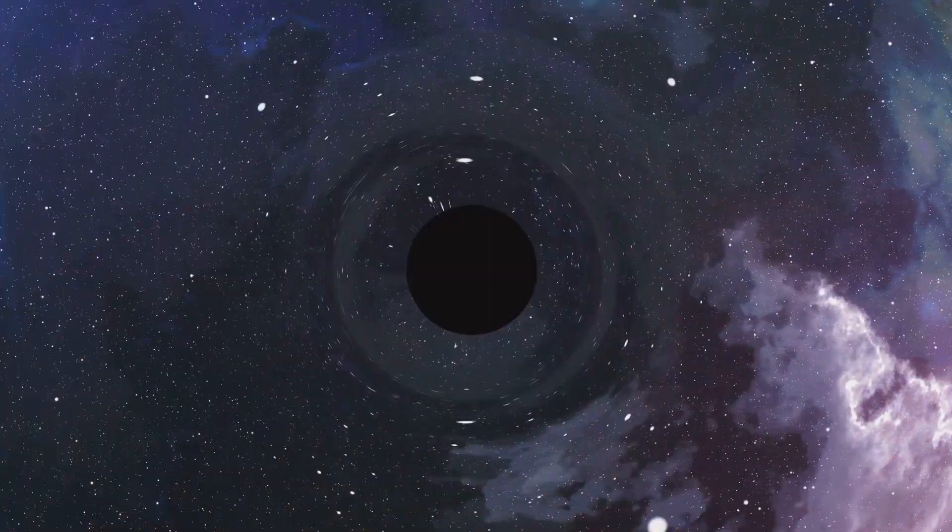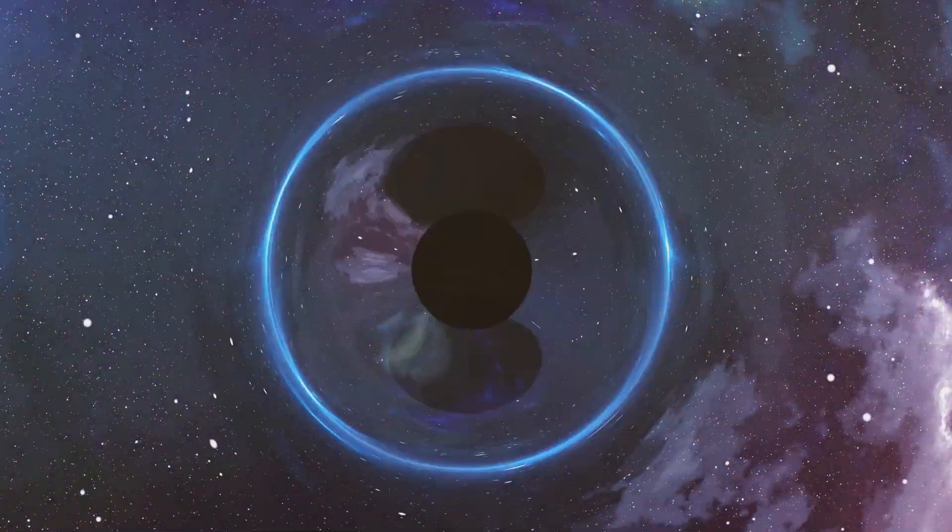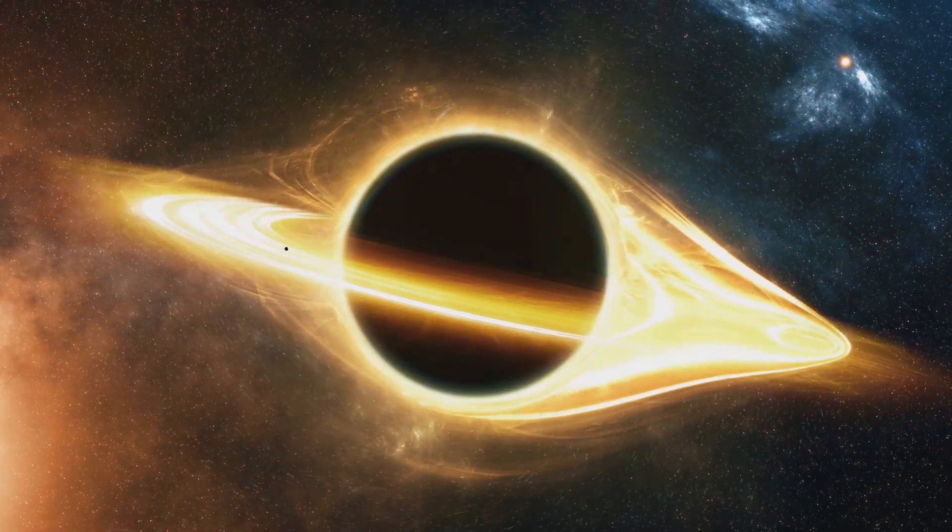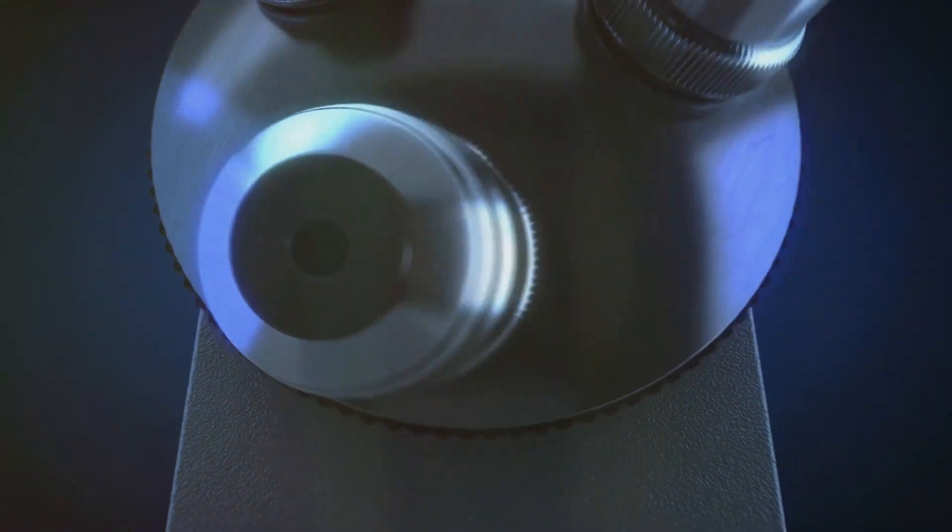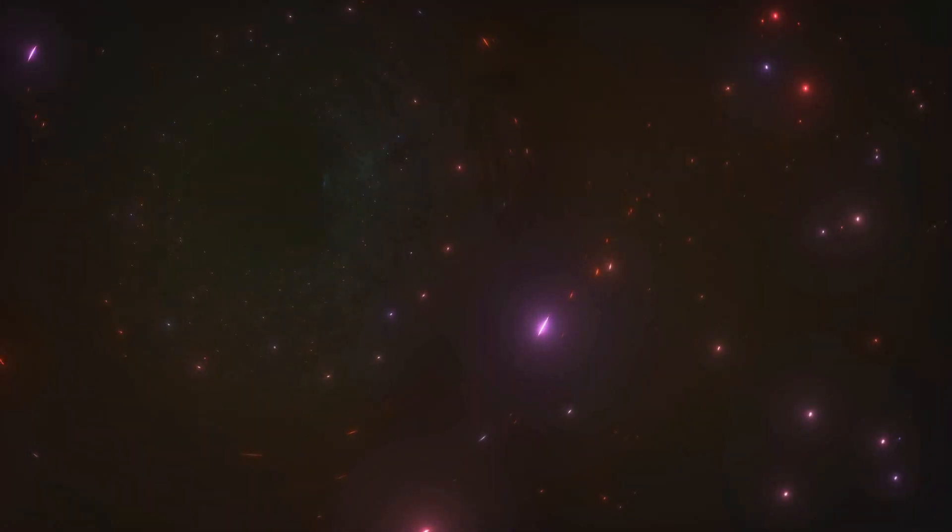Black holes are known for their massive appetites, and Porphyrian is no exception. Imagine a giant vacuum cleaner in space, sucking in everything that gets too close. They're so dense that not even light can escape their pull. Some scientists believe Porphyrian's appetite could be even bigger than we thought.